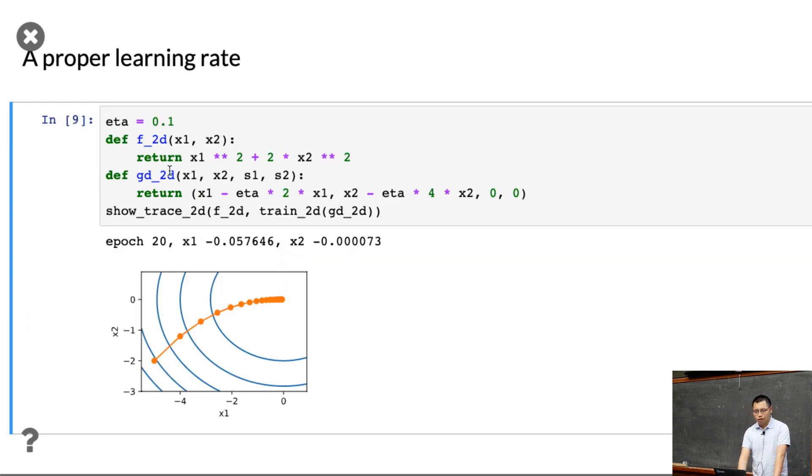Now here's the gradient descent. We define the object function, which is equal to here, this is the math definition of it. And we define how to compute the gradients. You know, given the current state, we compute the gradients, and given the learning rate, we just update x1 and x2. So this is very similar to what we had before, but only for two dimensions. So you can see that this is the initial point. We made very good progress. The optimal point, again, is just all zeros. So that is the proper learning rate.